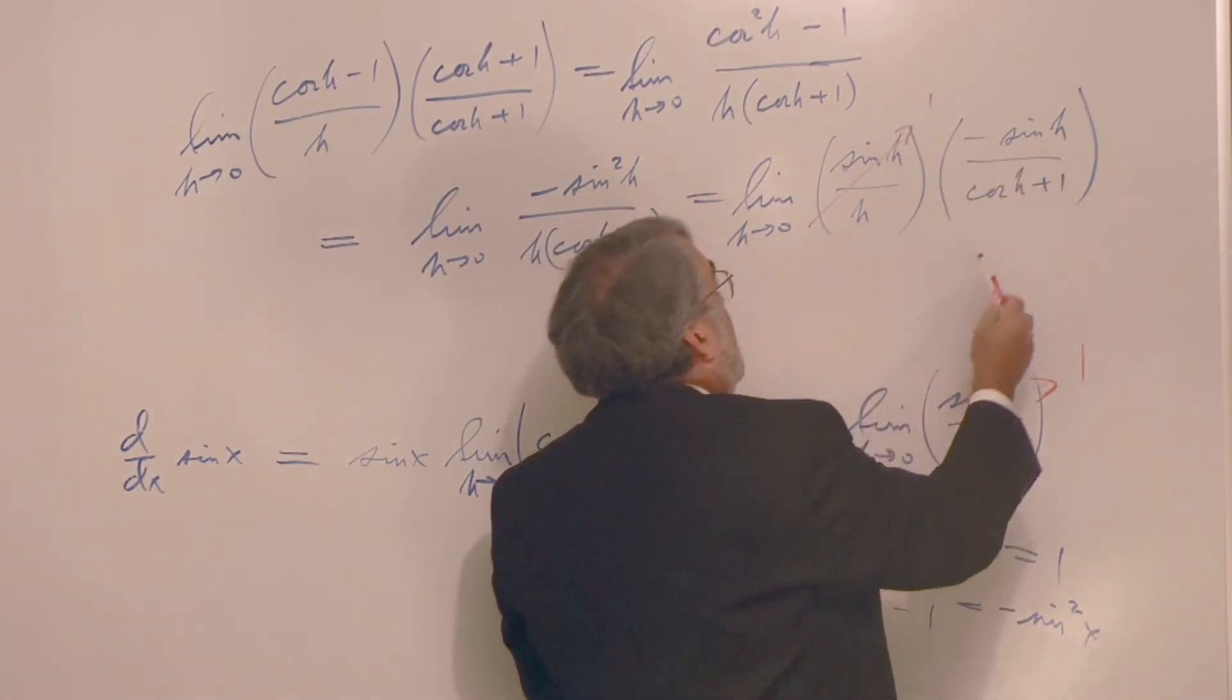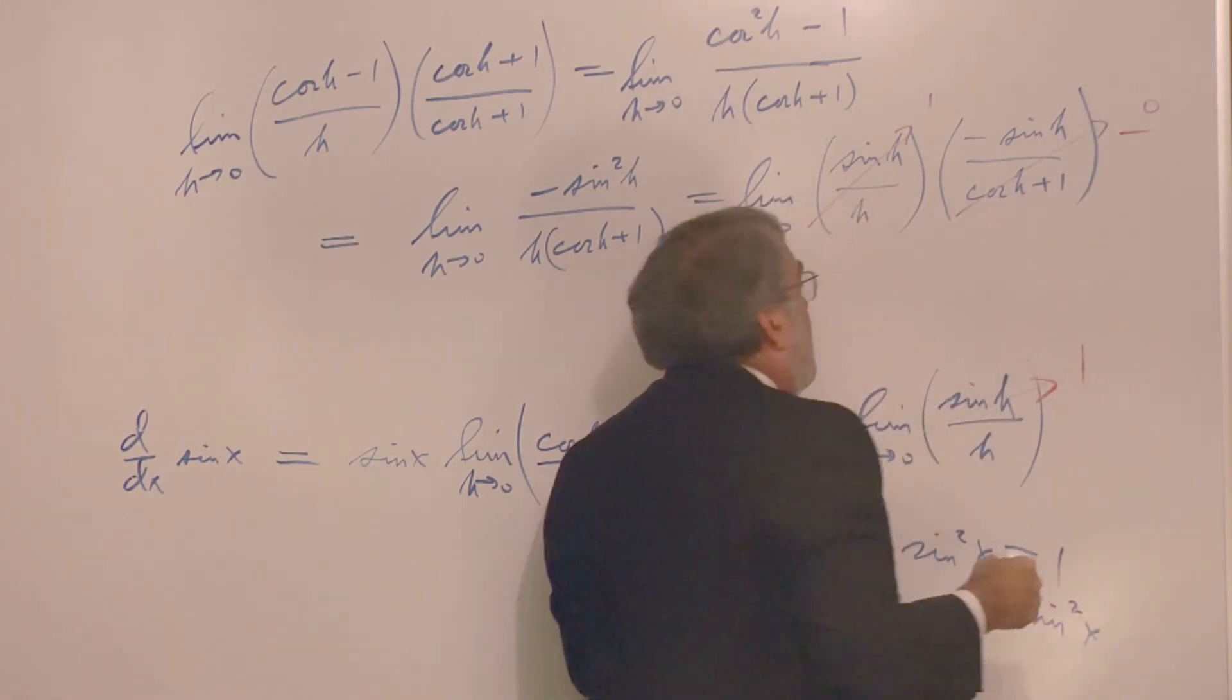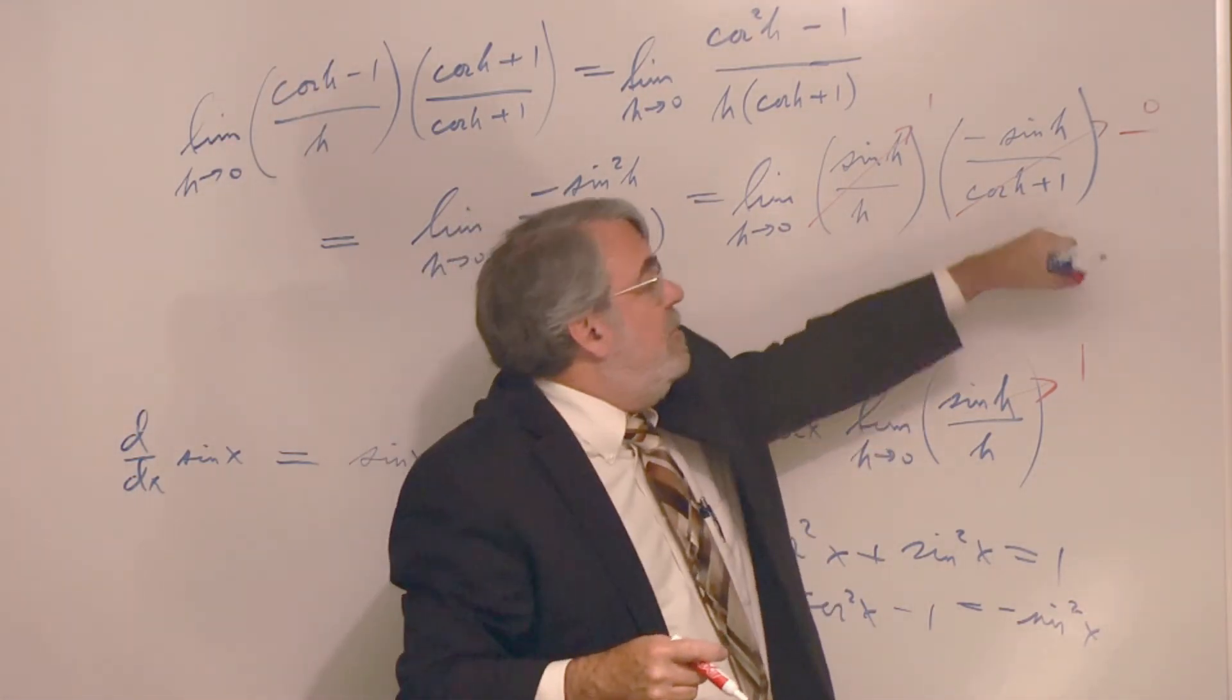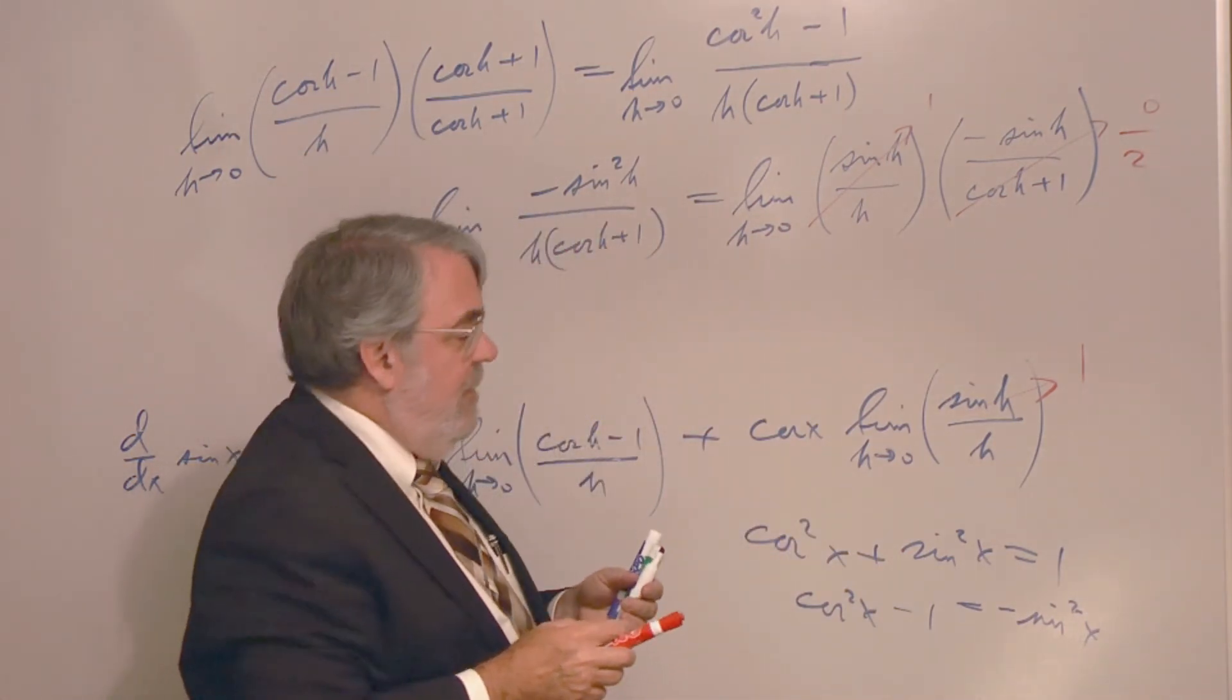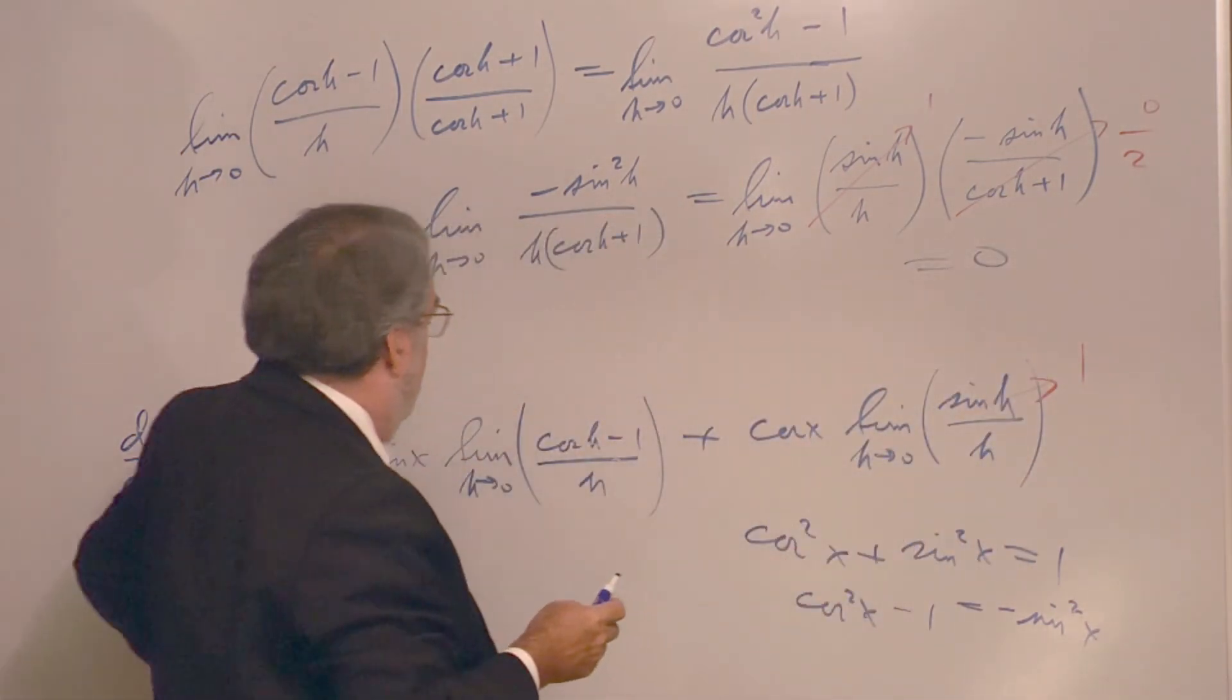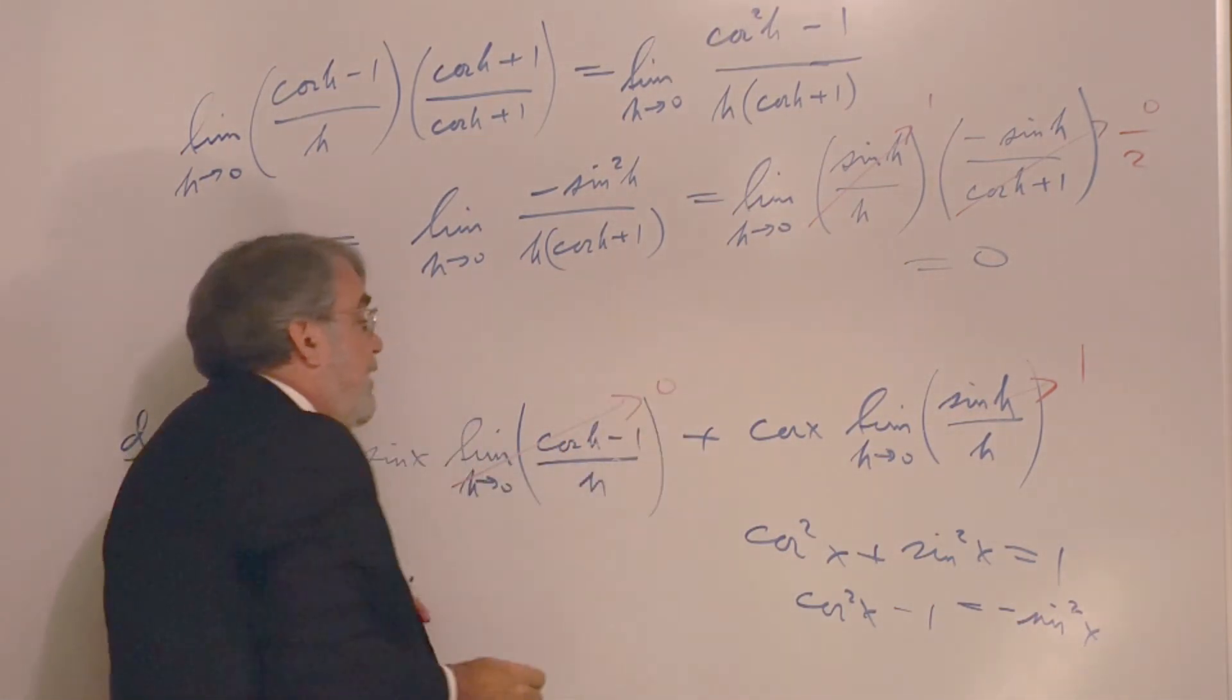Some theorem way back said that if both these limits exist, then this limit exists. So, I can split this up into a product of two limits if both those limits individually exist. Well, we know what this one is. We just figured it out. This limit goes to one. And over here, as h goes to zero, this goes to zero, or negative zero, doesn't matter what you call it. It goes to zero on top. And cosine of zero is one. One plus one is two. So, I have one times zero over two. That would be zero, wouldn't it? That's zero.